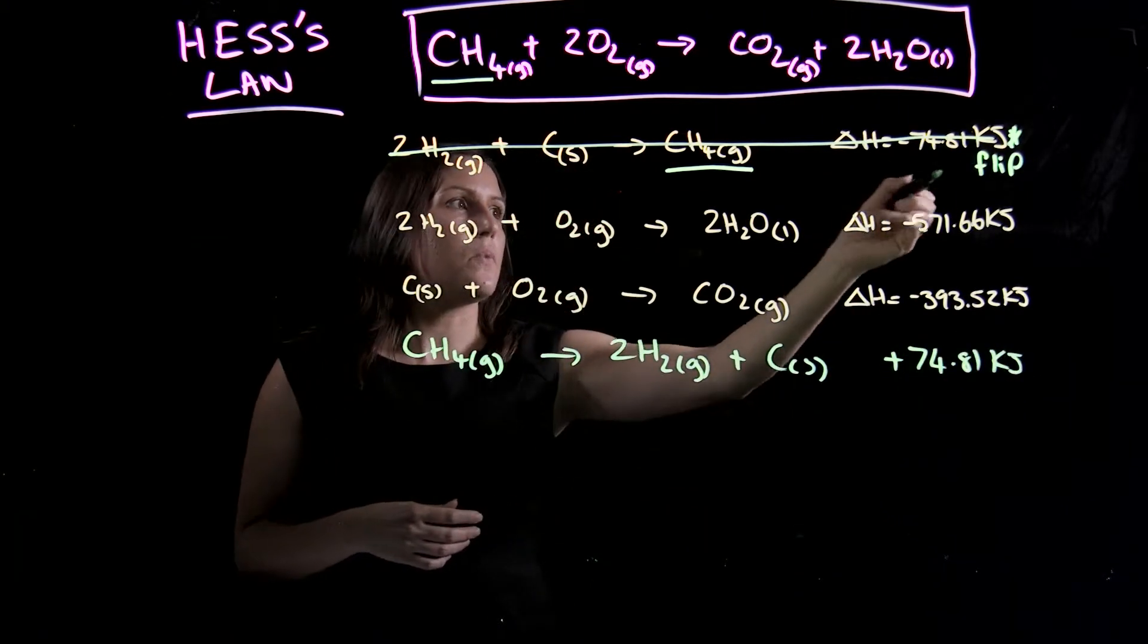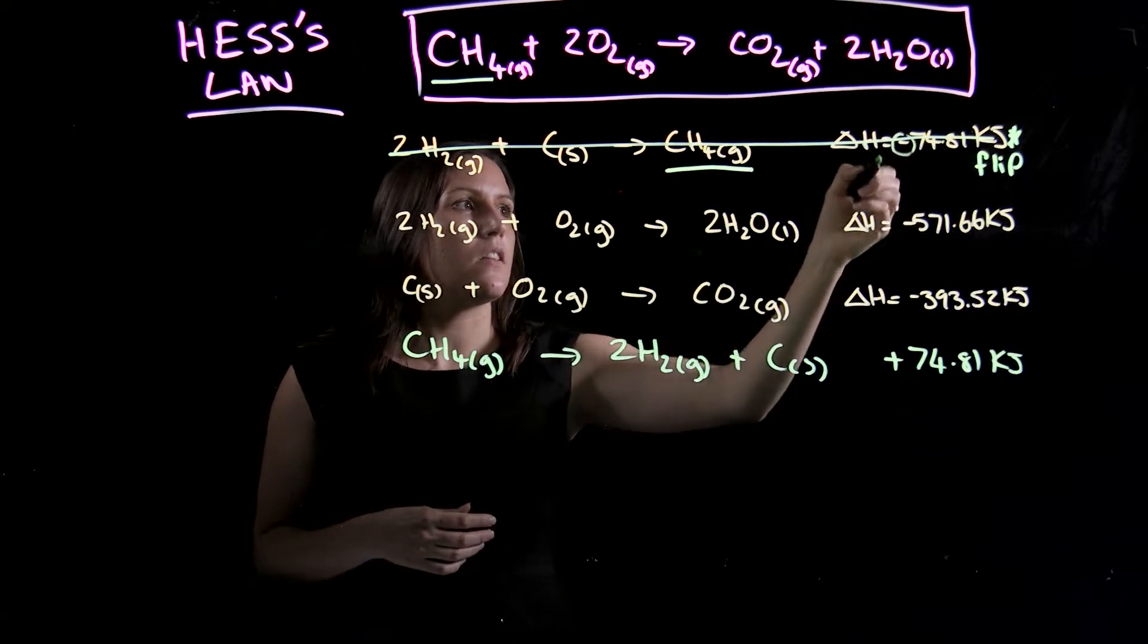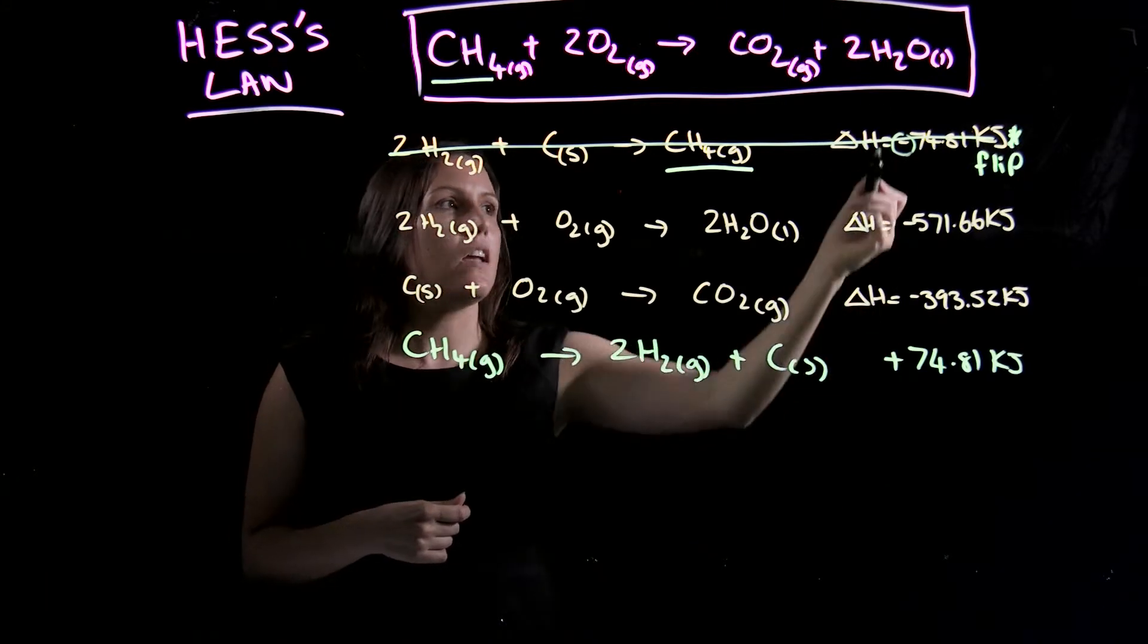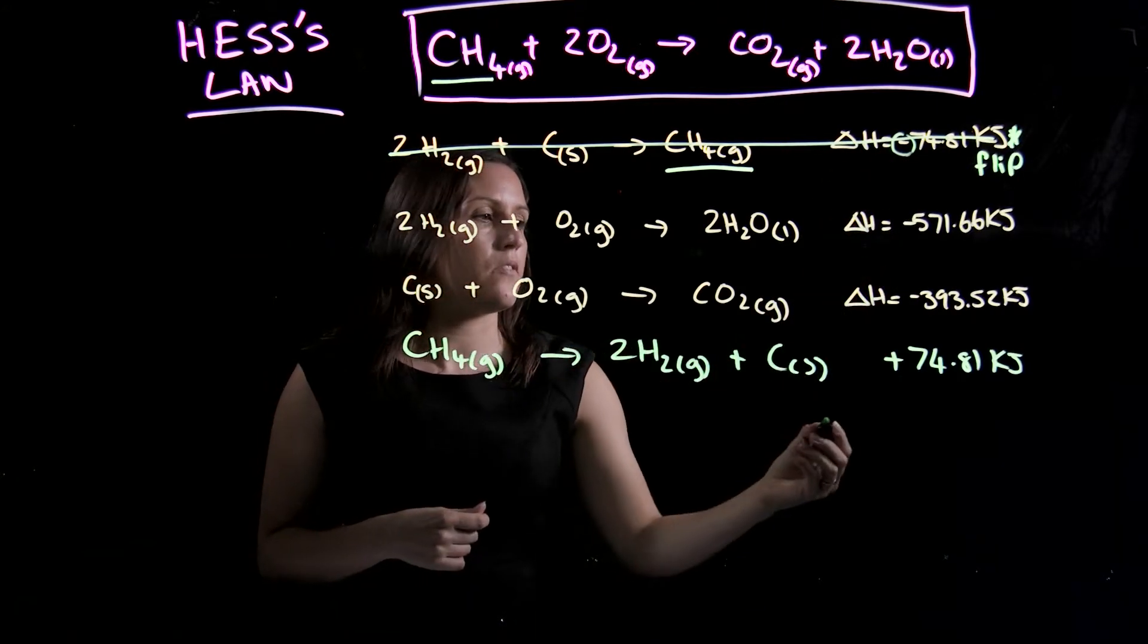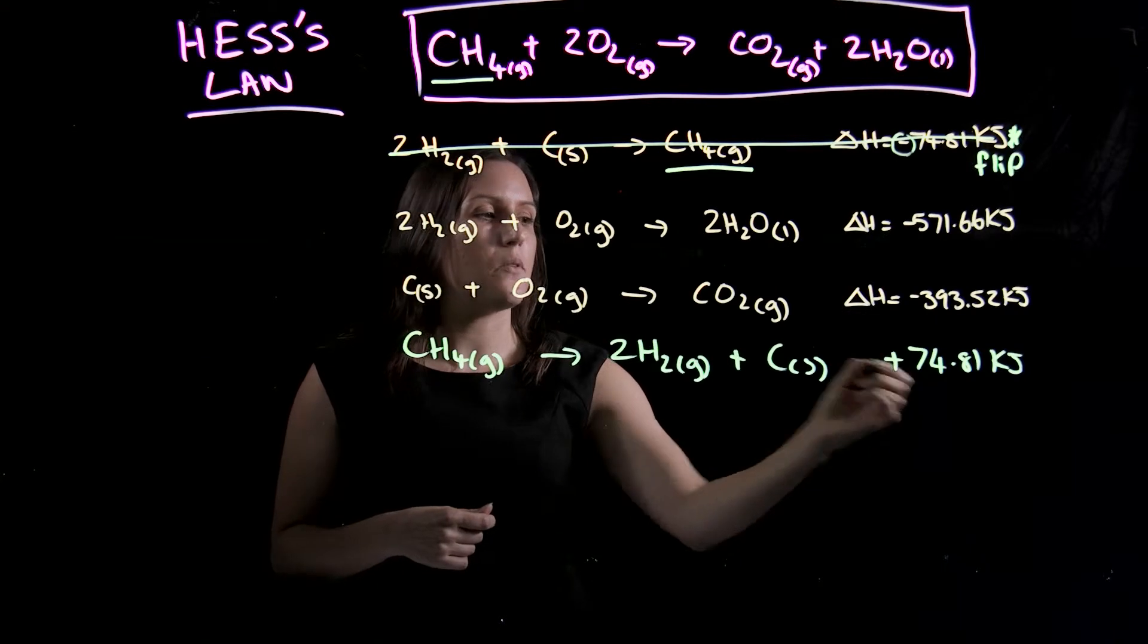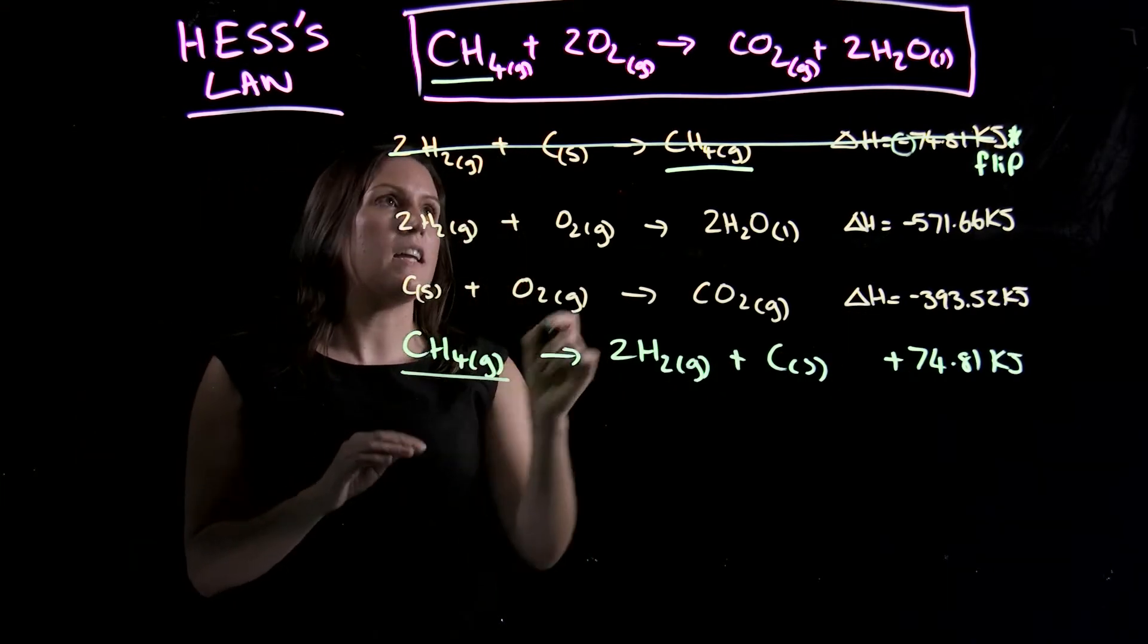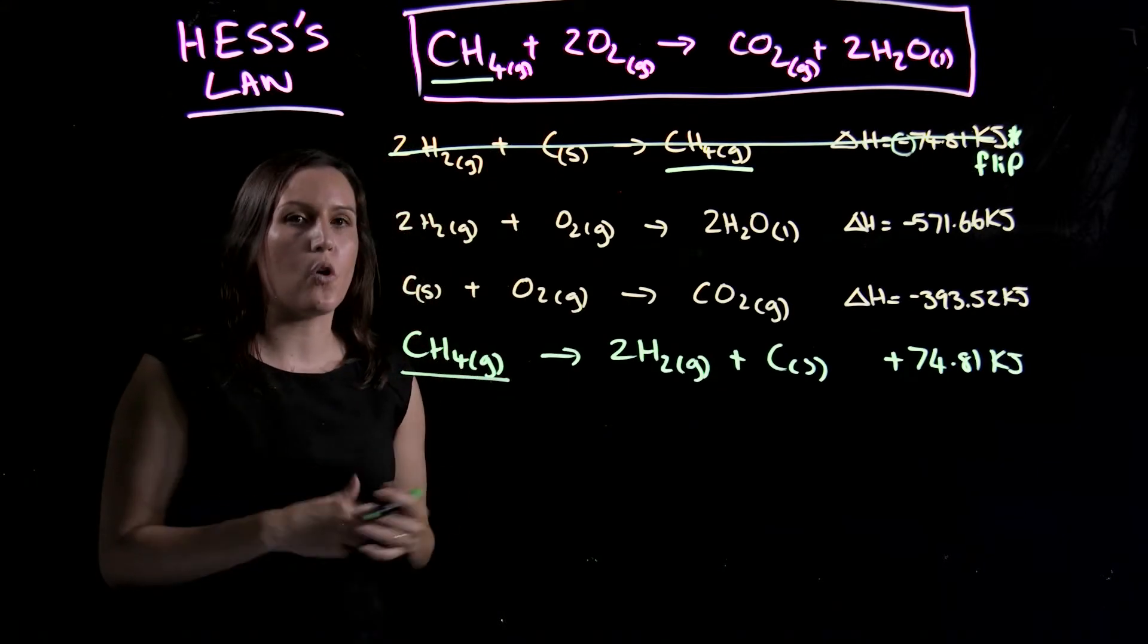So if I flip the reaction, I need to flip the sign or change the sign to the other sign. So if this is negative, it becomes a positive. If this is positive, it becomes a negative. Okay, so we've got a negative to start with, so it becomes a positive. So that reaction's good now. We've got our CH4 on the left-hand side, and we've got one of them.